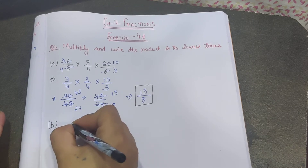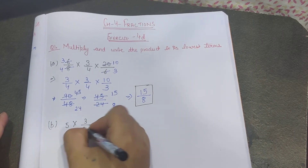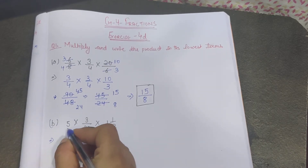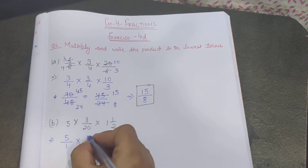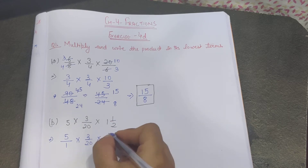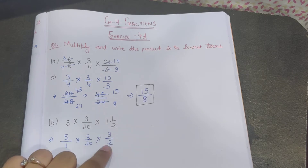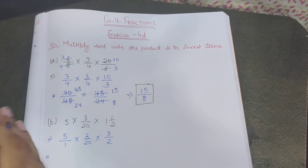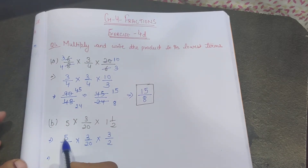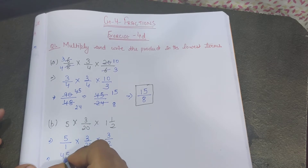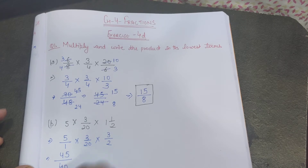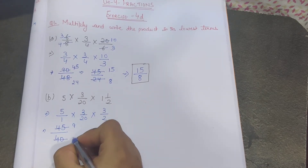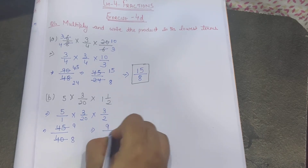Let's do part b: 5 multiplied by 3/20 multiplied by 1½. First, convert all numbers to proper fractions: 5 is written as 5/1, and 1½ becomes 3/2 (since 2×1+1=3). I don't find any common factors of the numerators and denominators, so I simply multiply: 3×3×5=45 in the numerator and 2×20=40 in the denominator. The common factor of 45 and 40 is 5, giving 9/8.